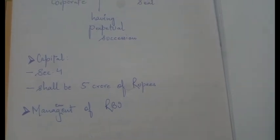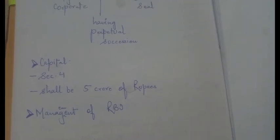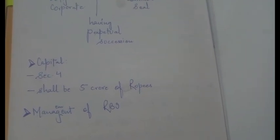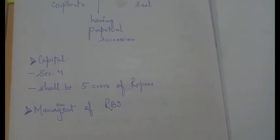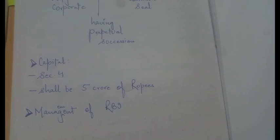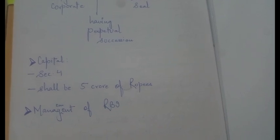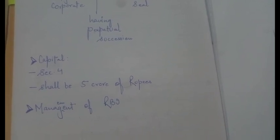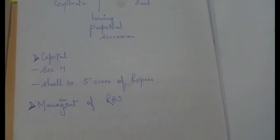If we talk about the capital provisions, Section 4 of the RBI Act states that the capital should be 5 crore rupees.